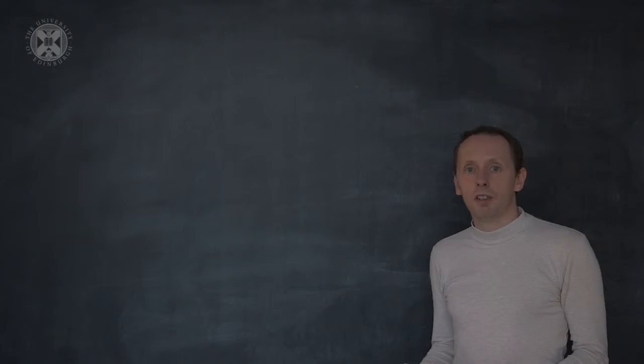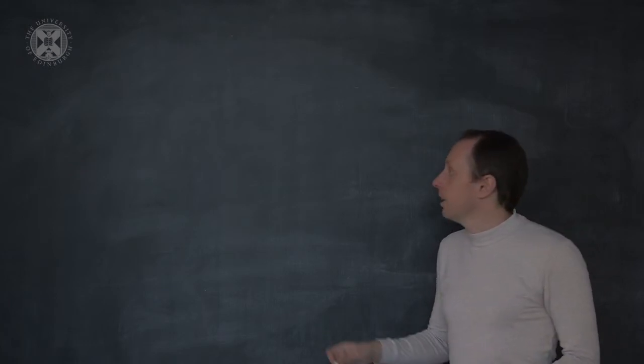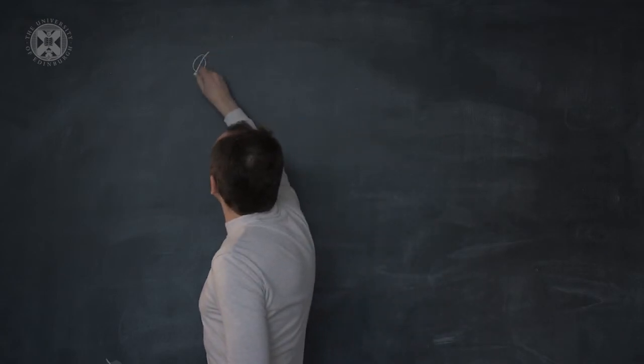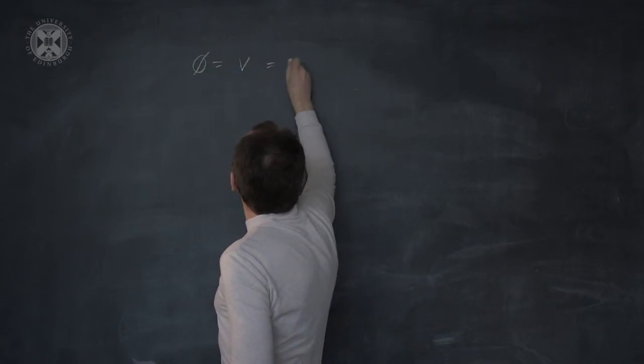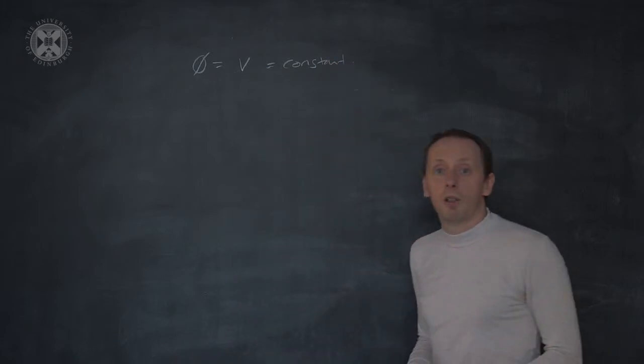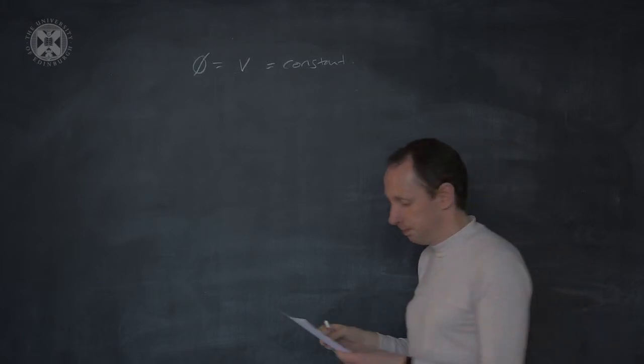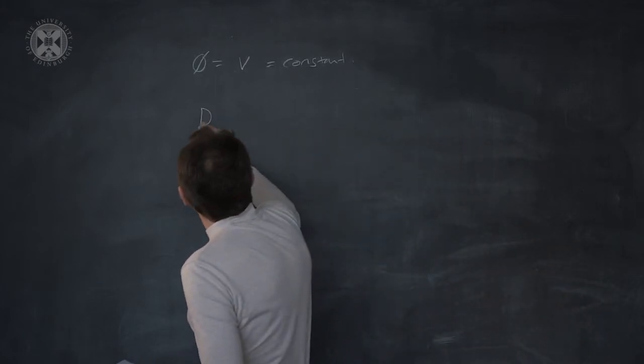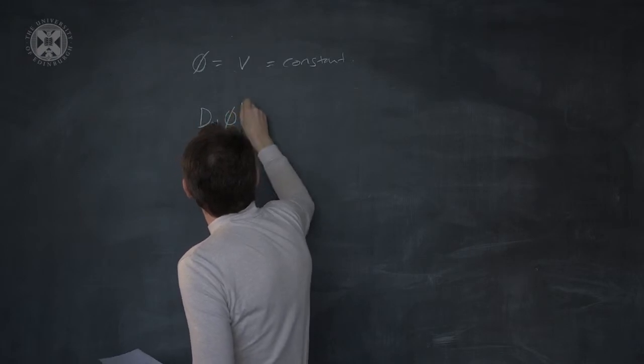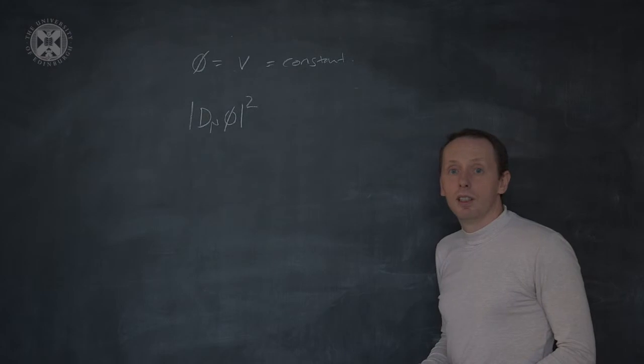So what happened to the phi-2 degree of freedom? Let's ignore phi oscillations for now. We'll take phi equals v equals constant and ask what happens to the gauge field, the photon field, A mu.